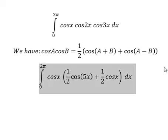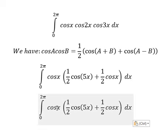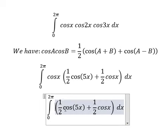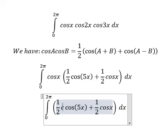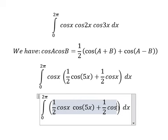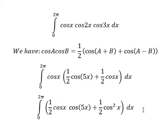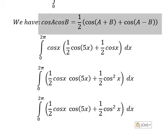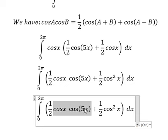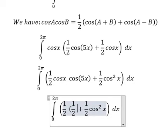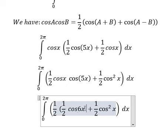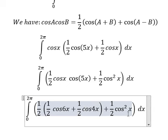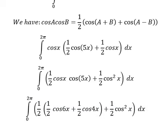And now cosine x multiplied by this one and this one. Next we apply the same formula here, so that should be about 1 over 2 multiplied by cosine 6x, and we have 1 over 2 cosine 4x. This one, we have the formula here.